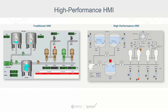High-performance HMIs can look basic and simplistic, typically using grayscale rather than traditional graphics and bright colors. Conceptually, this operates under the idea of visually contrasting critical and non-critical states. That way, when something does go wrong, a high-performance HMI will quickly guide the user to the source of the problem. Just at a glance, the red and orange draw our attention in the example on the right much quicker.